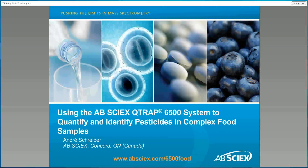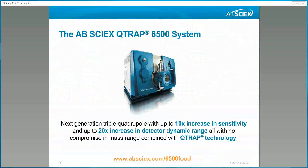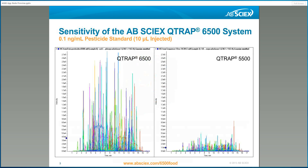Welcome everybody. Today I would like to talk about using the ABFIX QTRAP 6500 system to quantify and identify pesticides in complex food samples. The 6500 system was introduced in 2012 at the ASMS conference. It's a new mass spectrometer offering more sensitivity and a wider linear dynamic range for quantitation, and combines it with QTRAP technology for highest confidence in identification.